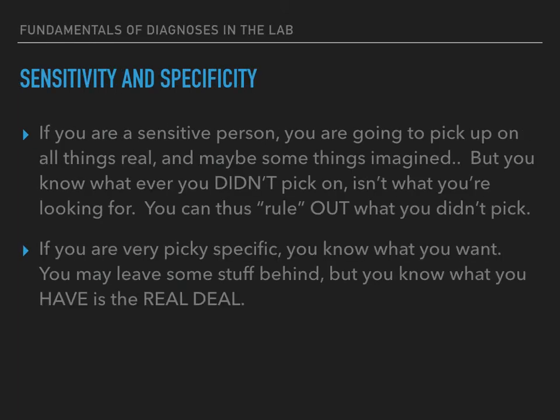Moving on to sensitivity and specificity. If you are a sensitive person, you'll pick up on all things real and maybe some things imagined. But you know whatever you didn't pick isn't what you're looking for, because you picked up everything true and some things imaginary — so you can rule out what you didn't pick. But if you're very picky or specific, you know what you want; you may leave some stuff behind, but you know what you have is the real deal.